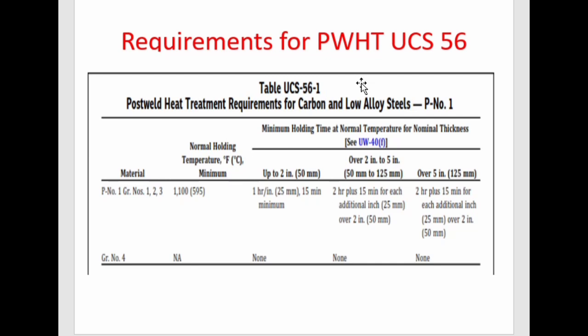Moving to Table UCS-56-1, which gives the post-weld heat treatment requirements for carbon and low alloy steels. For P-Number 1 material — ASME divides base metals into different P-numbers in accordance with their mechanical properties, weldability, and physical properties. P-Number 1 is further classified into Group Numbers 1, 2, and 3.